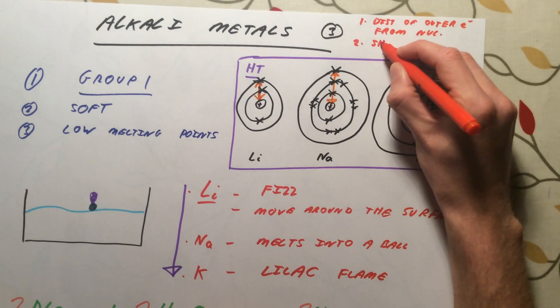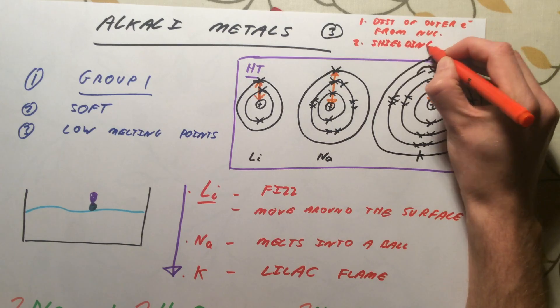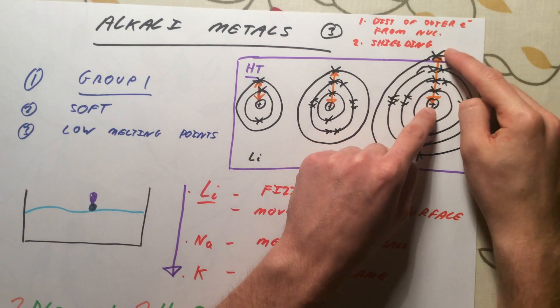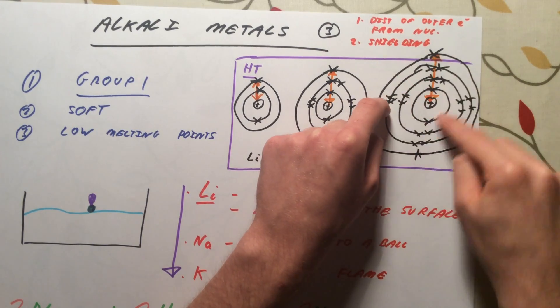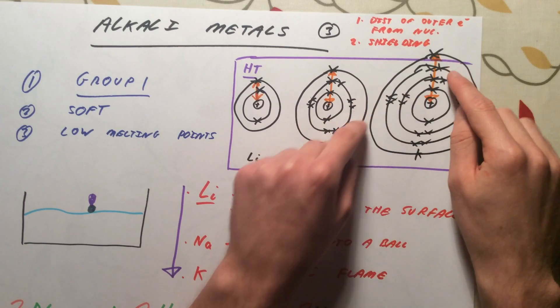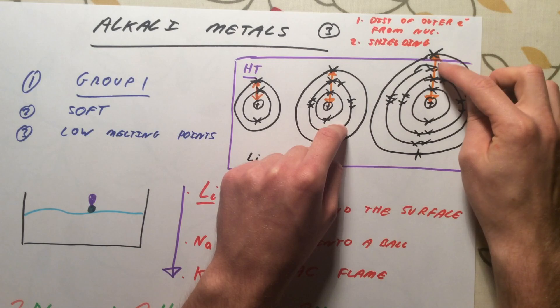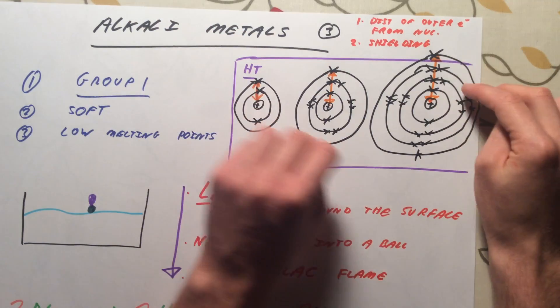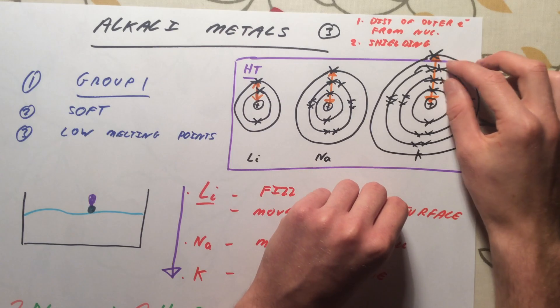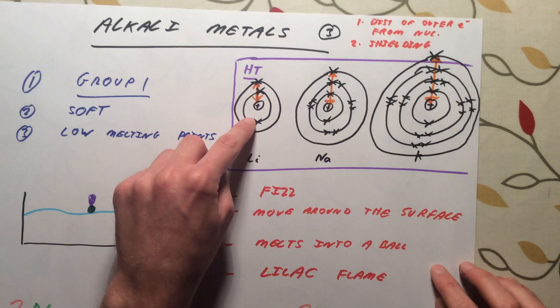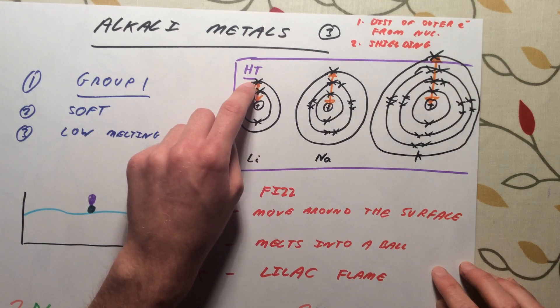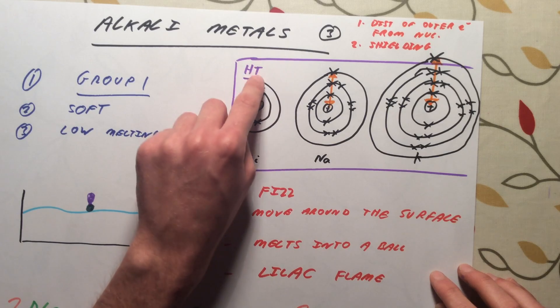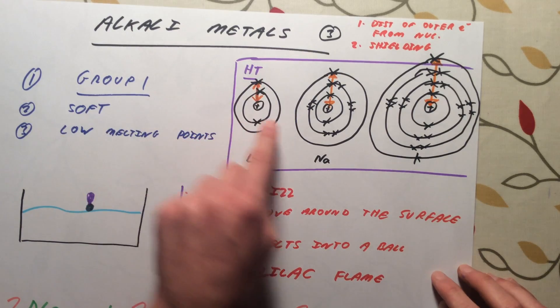The second factor is called shielding. Not only is the outer electron in potassium further away from the positively charged nucleus, you also have a lot more electrons between that nucleus and the outer electrons. We say that these inner shells, or these inner electrons, are going to shield this outer electron from the positive charge of the nucleus. What this means is that the outer electron sees, if you like, less of that positive charge from the nucleus, so again the force of attraction is weaker and this electron is more easily lost. For lithium, you do not have anywhere near as much shielding. The electron is much closer. There is only one shell between the outer electron and the nucleus, so the outer electron sees more of that positive charge, and it is harder for something to come and rip that electron away, so lithium is less reactive than sodium and potassium.